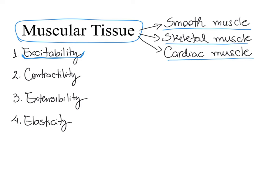When muscle cells are excited, how do they respond to this stimulus? They contract — and that is what we call contractility. Now, besides contracting, we can also stretch our muscles. The property of a tissue to be stretched without the cells getting damaged is what we call extensibility. After a muscle cell is extended or contracted, it is capable of going back to its original shape and length. This capability of returning to the original length and shape is what we call elasticity.